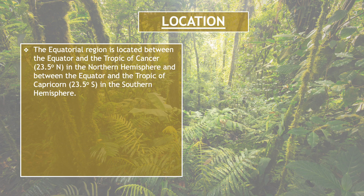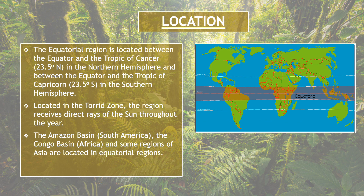Now, let's talk about the exact location of the equatorial region. The equatorial region is located between the equator and the Tropic of Cancer in the Northern Hemisphere, and between the equator and the Tropic of Capricorn in the Southern Hemisphere. As you can see here, all areas covered with the colored band on the map given in this slide constitute the equatorial region. Located in the torrid zone, the region receives direct rays of the sun throughout the year.